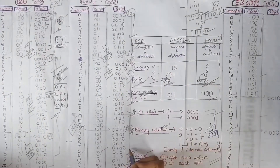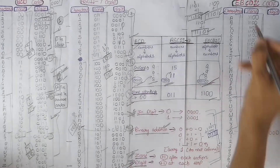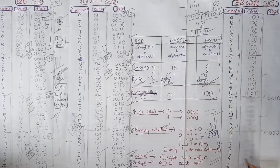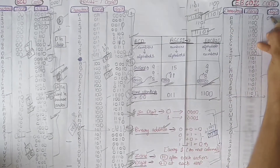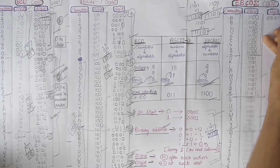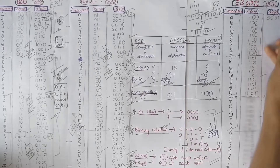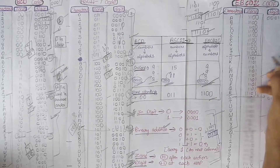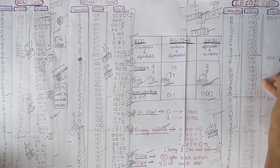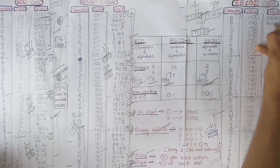ASCII code is completed. Now we complete the EBCDIC code. The first section is of alphabets, starting from 0001. The second section is also of alphabets, also starting from 0001. Simply adding plus 1 at each step, we complete the whole EBCDIC code.